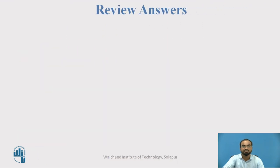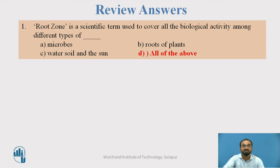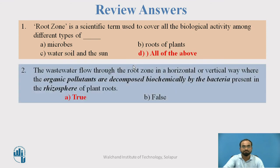Now let us see the answers. Root zone is a specific term used to cover all the biological activity among different types of microbes, roots of plants, water, soil, and sun — so the answer is all of the above. The statement that wastewater flows through the root zone horizontally or vertically where organic pollutants are decomposed biomechanically using microorganisms is true, due to the presence of the rhizosphere — the zone near the plant roots where oxygen is provided to microorganisms.